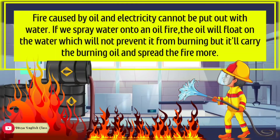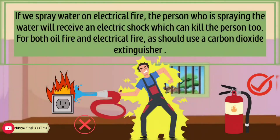Fire caused by oil and electricity cannot be put out with water. If we spray water onto an oil fire, the oil will float on the water, which will not prevent it from burning but will carry the burning oil and spread the fire further. And if we spray water on an electrical fire, the person spraying the water will receive an electric shock, which can be fatal. So for both oil fires and electrical fires, we should use a carbon dioxide extinguisher.